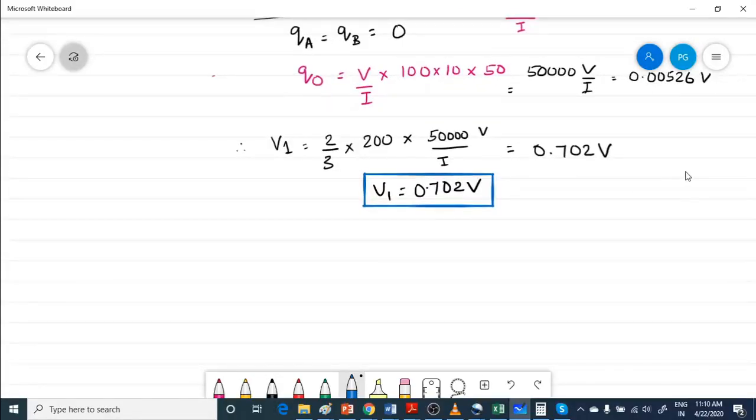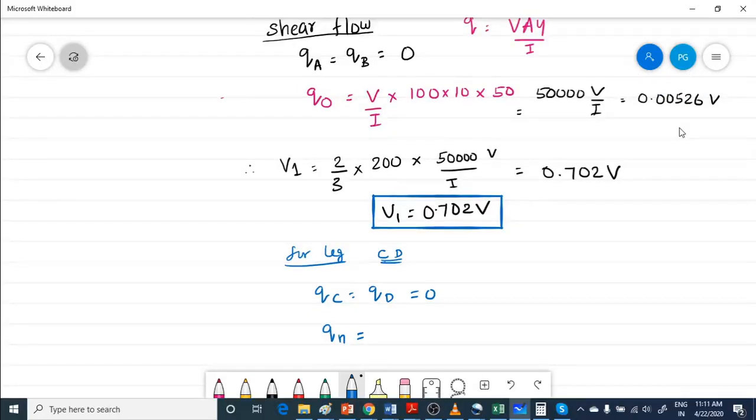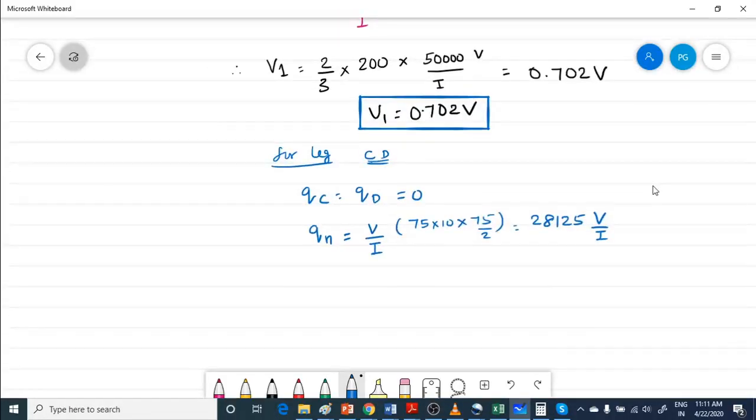Similarly we can find out for the right leg. Shear flow at N is equal to V by I. Area above the central axis is 75 into 10 into 75 by 2. This is A Y bar. So V2 is equal to 2 third of 150, 28,125 V divided by I.